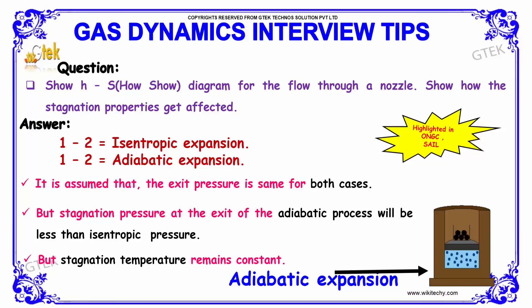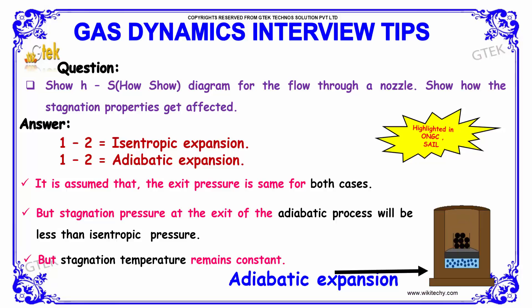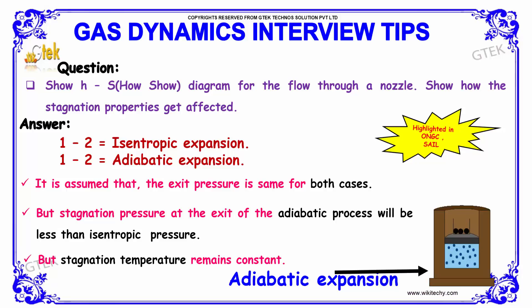We need to show the H-S diagram — that is the enthalpy-entropy diagram — for the flow through a nozzle, and show how the stagnation properties get affected. The two cases are: 1 to 2, which is isentropic expansion, and 1 to 2 prime, which is adiabatic expansion. It is assumed that the exit pressure is the same for both cases.